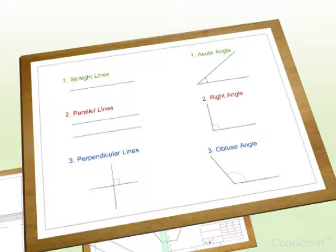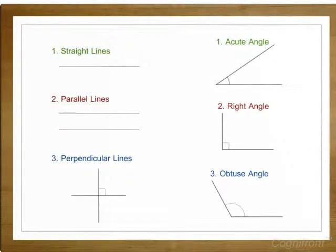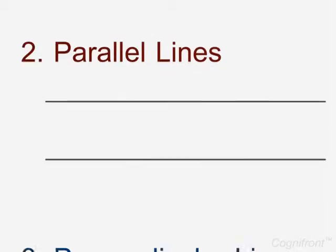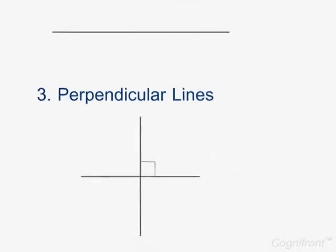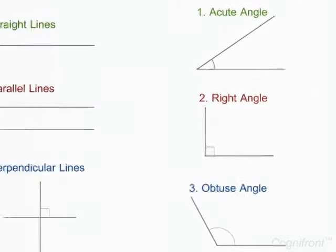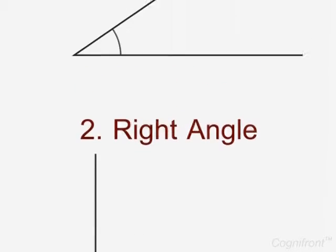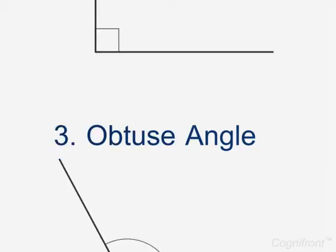Ok, the study of geometrical construction starts by understanding lines and angles. Lines have different types such as straight lines, parallel lines and perpendicular lines. Angles also come in various flavors like right angle, an acute angle and an obtuse angle.